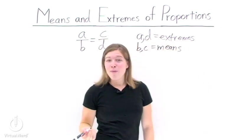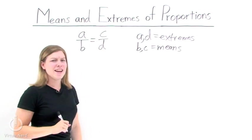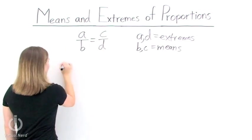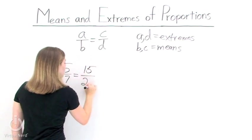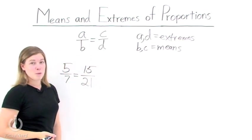Now we know how to pick out the means and extremes of a proportion. Let's take an example for practice. 5 over 7 equals 15 over 21. Find the means and extremes for this proportion.